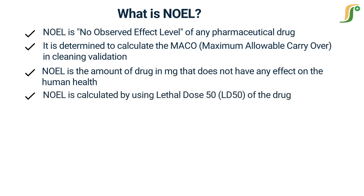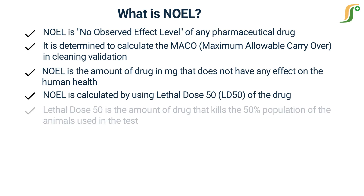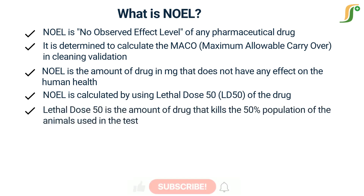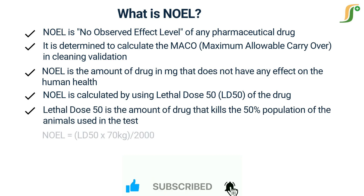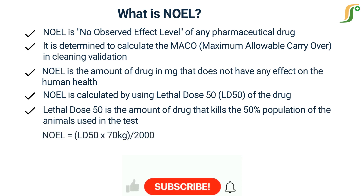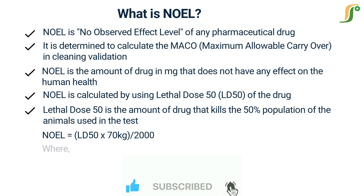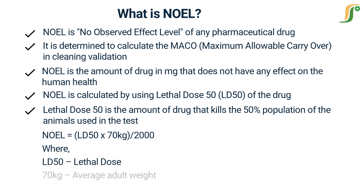NOEL is calculated using Lethal Dose 50 (LD50) of the drug. LD50 is the amount of drug that kills 50% of the animal population used in the test. The formula is: NOEL = (LD50 × 70 kg) / 2000, where LD50 is the lethal dose, 70 kilograms is the average adult weight, and 2000 is a constant.